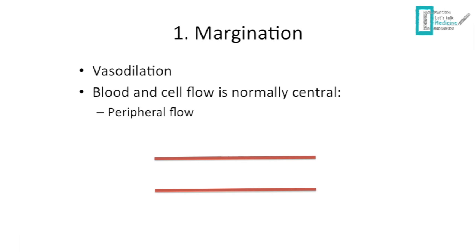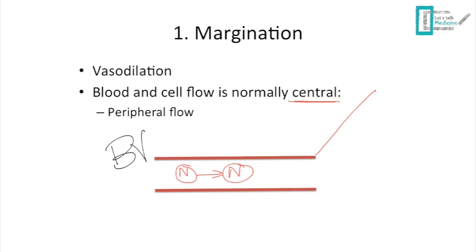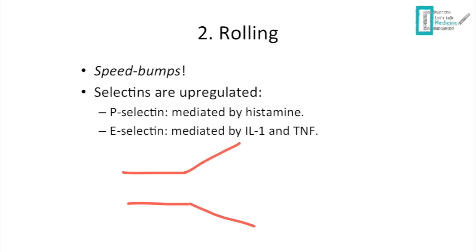Starting with the first step of neutrophil function and arrival, we look at the normal blood vessel and normal blood flow. Inside the blood vessel you have inflammatory cells — in this case neutrophils — flowing in a central pattern. In acute inflammation, vasodilation occurs, which leads to margination, where neutrophils move to the peripheral flow. This is the first step of neutrophil arrival.